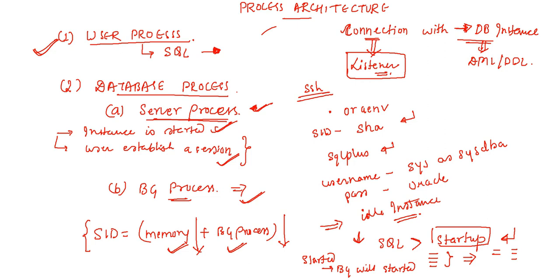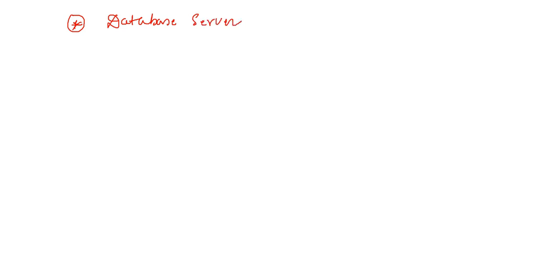Moving forward with the process architecture, this process structure varies for different Oracle database configurations depending on the operating system. The code of the connected user can be configured as dedicated and shared server - there are two more terms you should know about. We have already understood about the database server: when the database is configured, that is considered as a database server. We can denote the database server with the help of host name, because to uniquely identify any server remotely, we have the host name and IP.